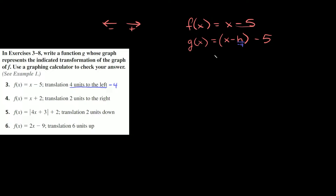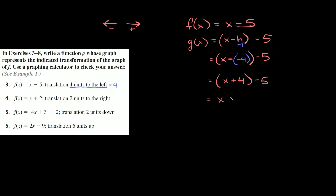So g of x is going to be equal to x minus negative four, and we still have that minus five. Simplifying, x minus negative four is equal to x plus four, and then minus five. We can drop the parentheses, so we have x plus four minus five, which is equal to x minus one. So g of x is equal to x minus one.